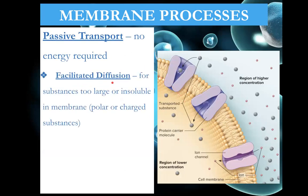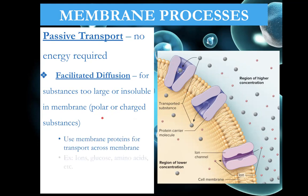Also under passive transport, facilitated diffusion involves things that may not be able to go through the membrane directly. Membrane proteins allow them to pass through — it could be something with a charge or a larger molecule that can't fit otherwise. Facilitated diffusion works the same as diffusion, but uses a protein as a safe-passage tunnel through the membrane. Ions with a charge, glucose which is polar and larger, and amino acids are all able to pass through via facilitated diffusion.